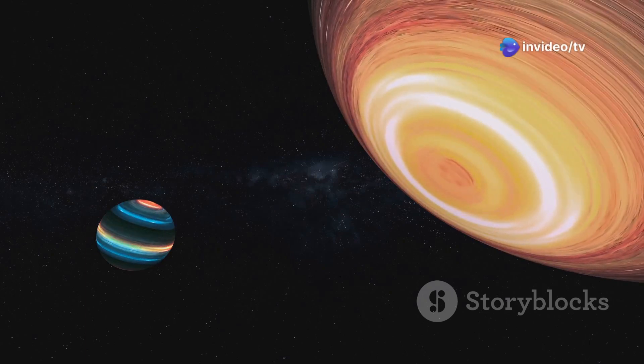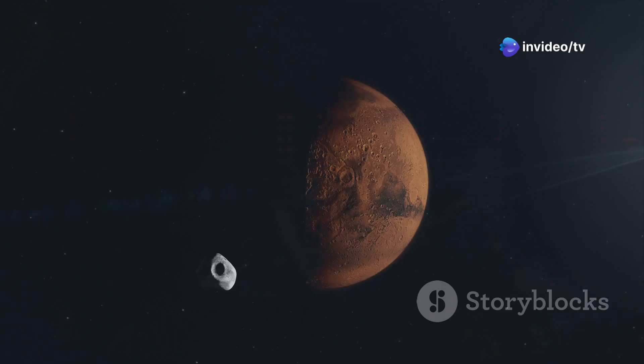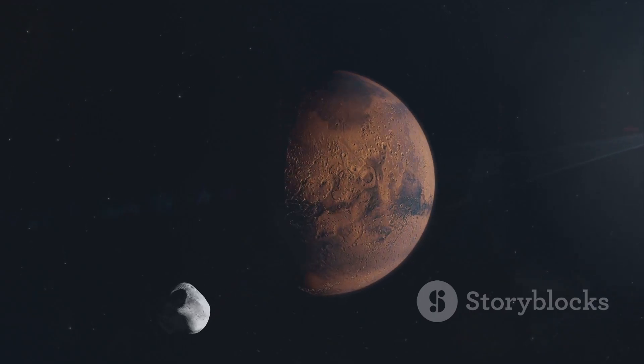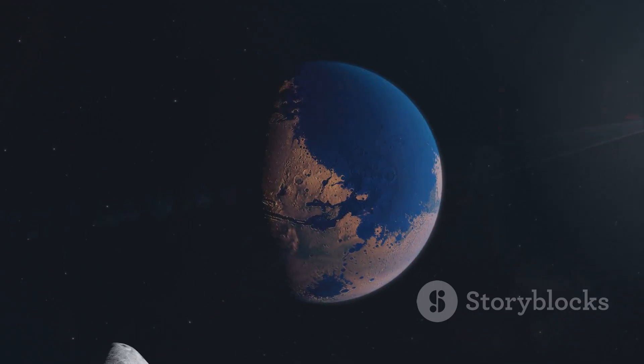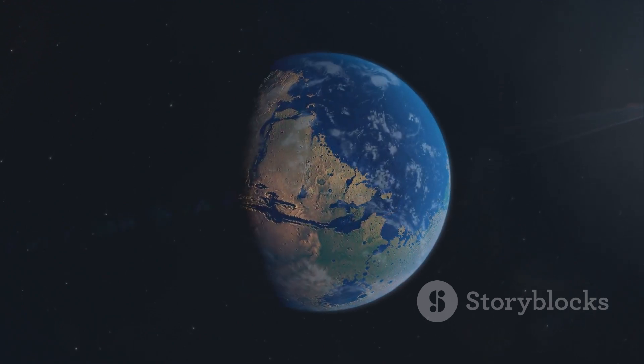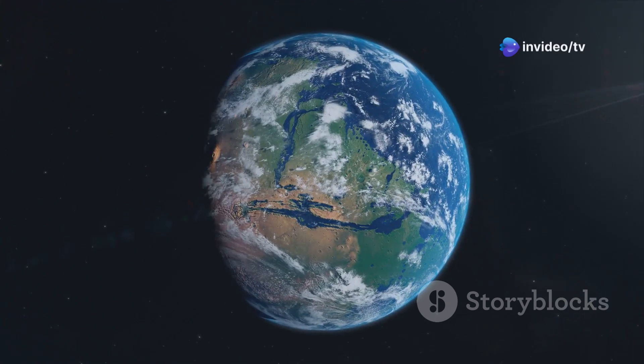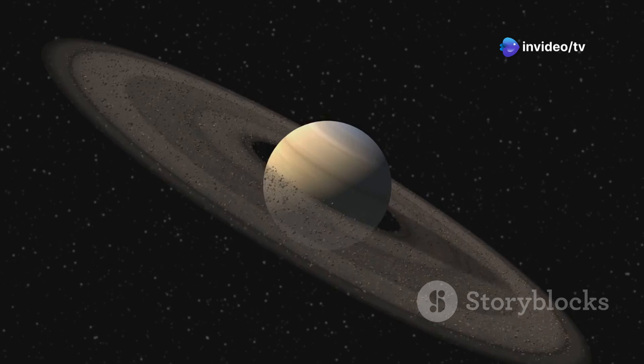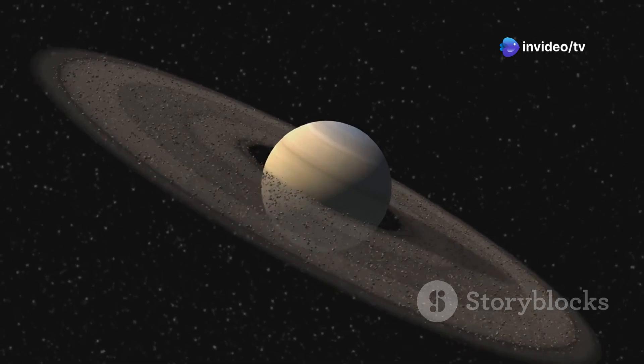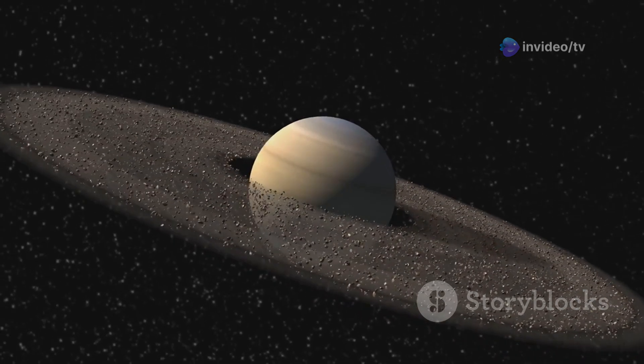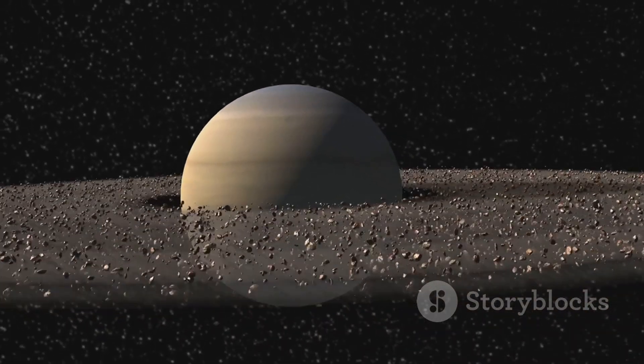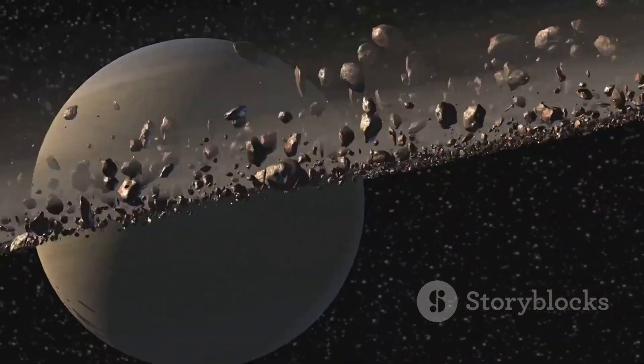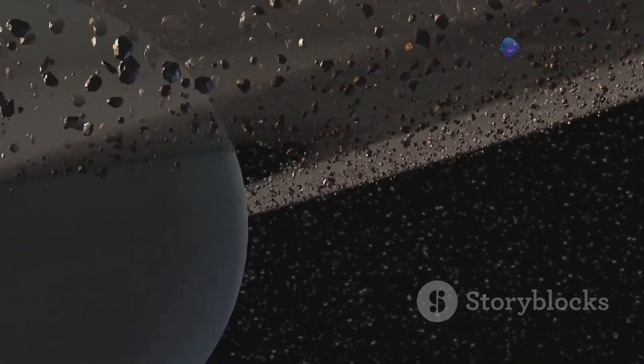There are rocky terrestrial planets like Earth and Mars. These planets have solid surfaces and are composed mainly of rock and metal. They are the inner planets, closest to the sun. There are gas giants like Jupiter and Saturn, composed mostly of hydrogen and helium with no solid surface. Their thick atmospheres are home to some of the most extreme weather in the solar system. And there are ice giants like Uranus and Neptune, with icy compositions and thick atmospheres of hydrogen, helium, and methane, giving them their characteristic blue hues.